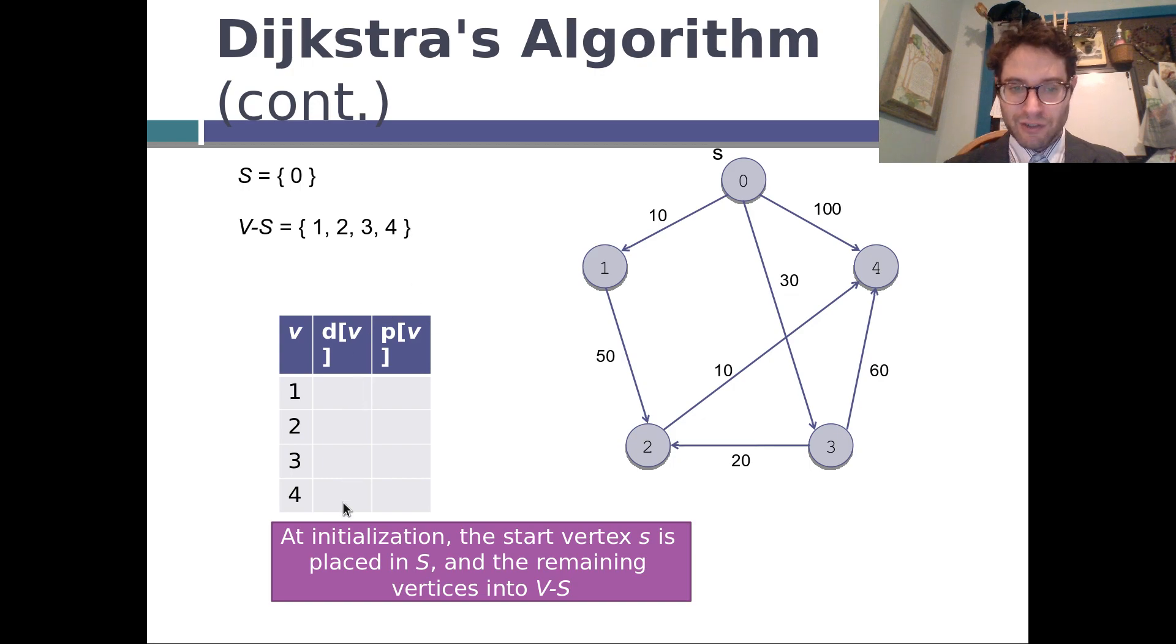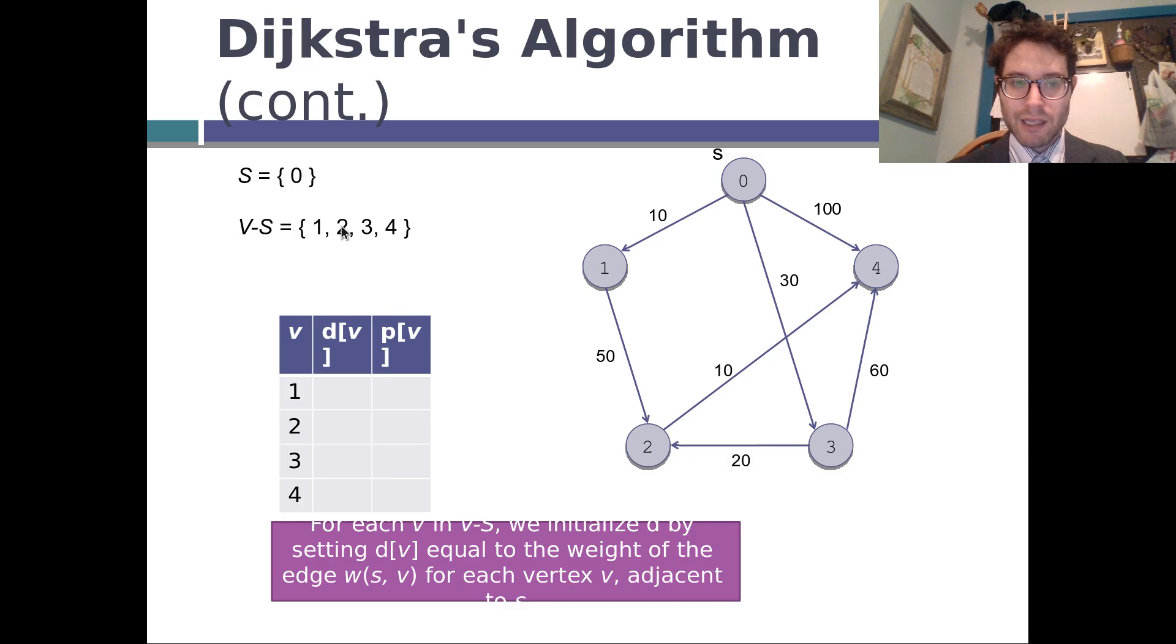So now we need to populate the initial distances. So what we do is that we first look at everything in this set and then ask, if there's an edge between the starting vertex and me, then that's our initial distance. So there's an edge from 0 to 1. There's an edge from 0 to 3. And there's an edge from 0 to 4 of 10, 30, and 100, respectively. So those are our initial distances. 10, 30, 100.